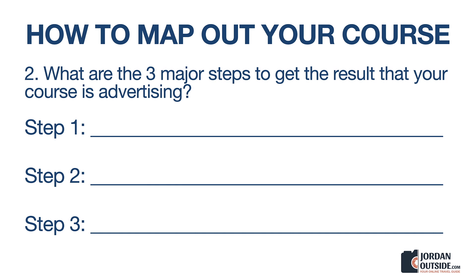Once you have that, next we're going to go through the three major steps to get the result that your course is advertising. It could be more than three steps, but typically three steps makes people feel like it's achievable — something they could start and actually finish. When it's 18 or 20 steps, you feel like you probably won't actually achieve the result. Go ahead and fill out the three major steps it will take to achieve the result your course will solve or provide.